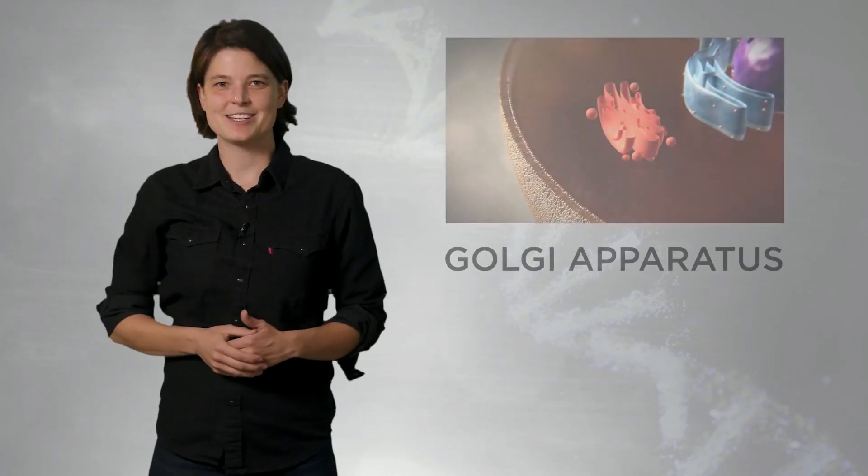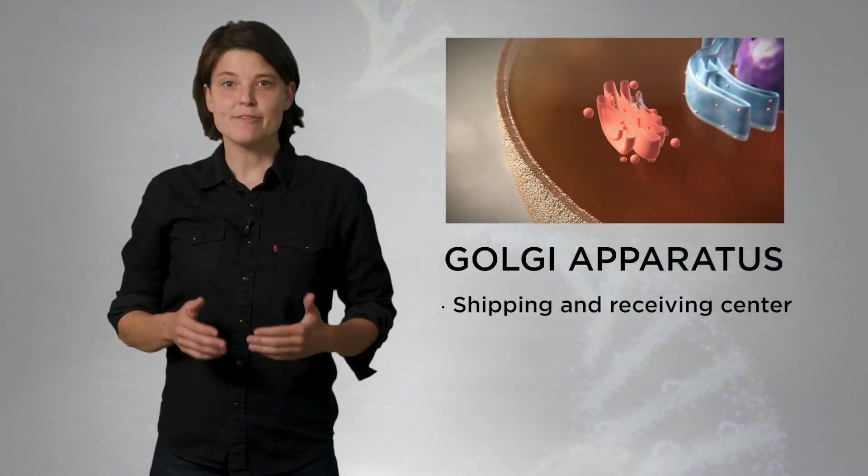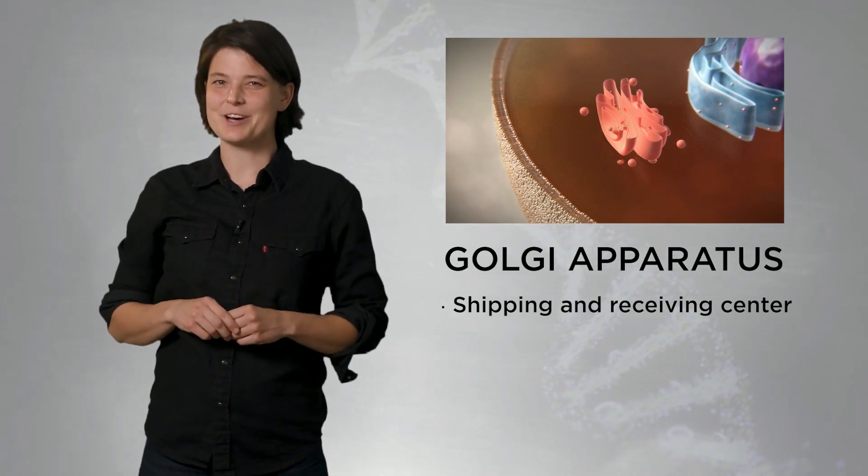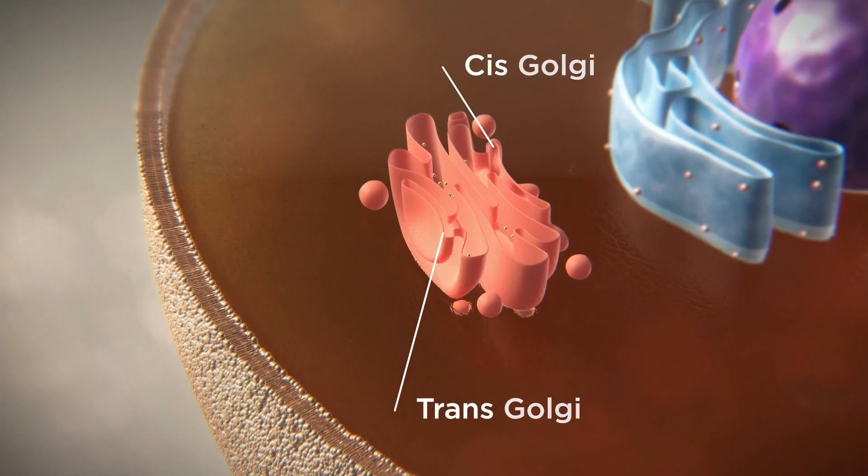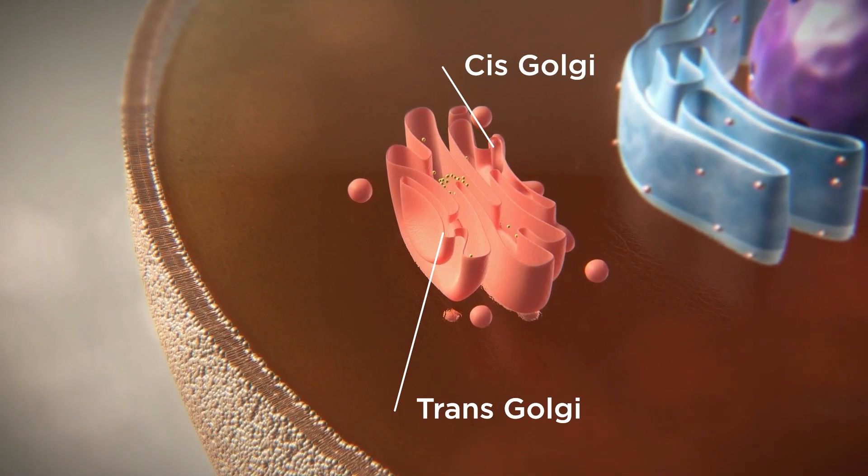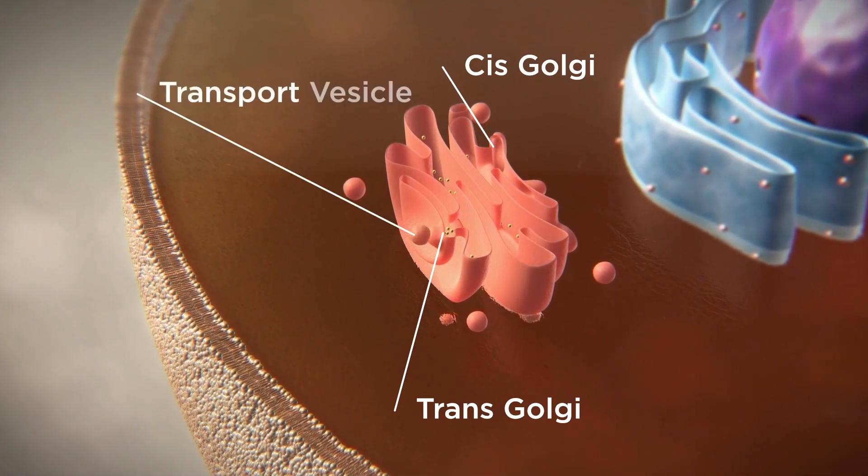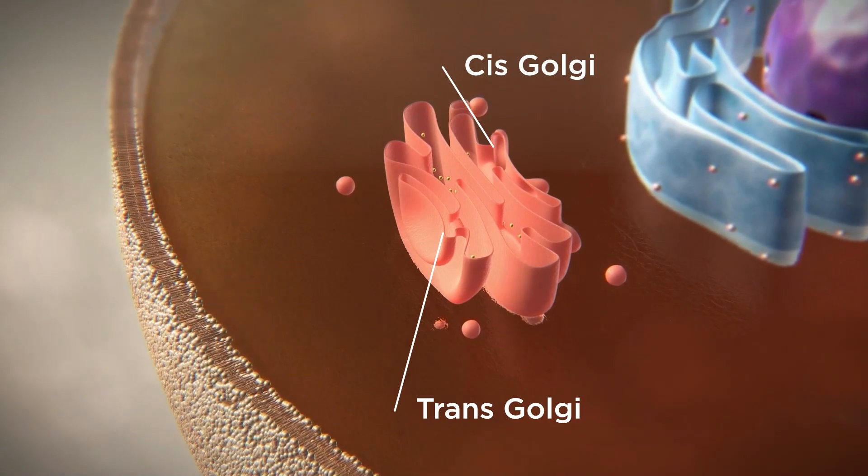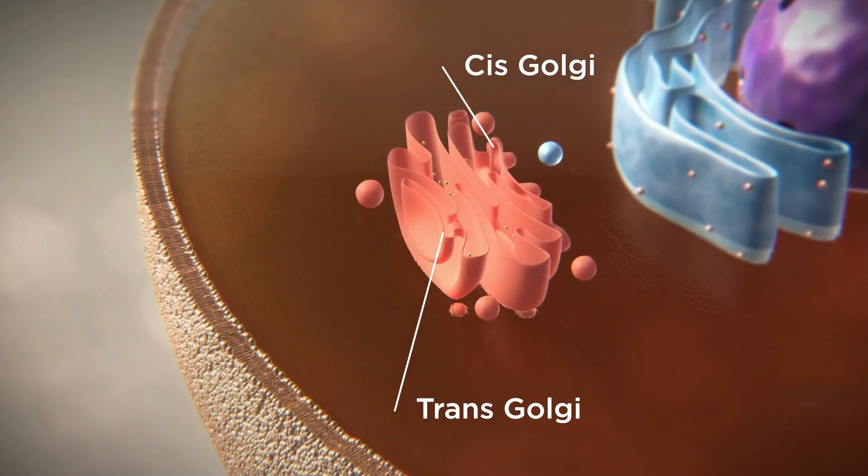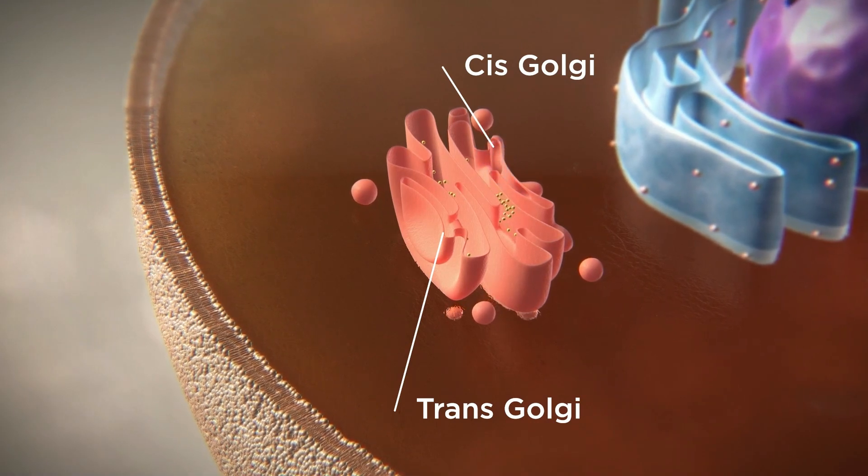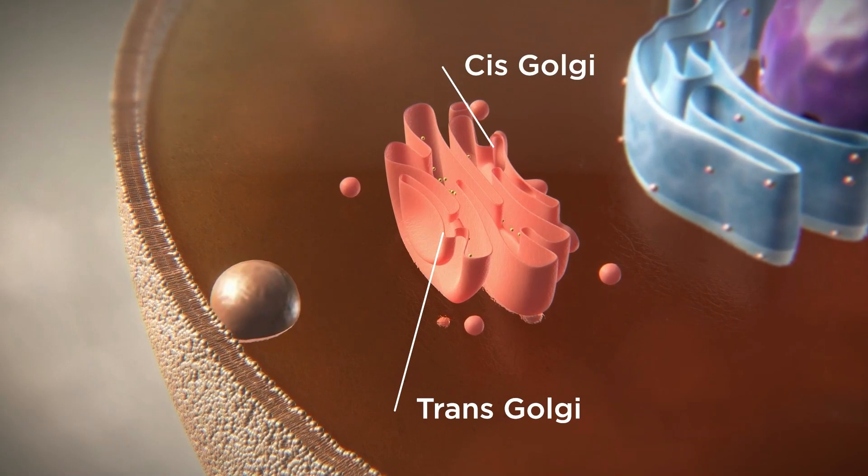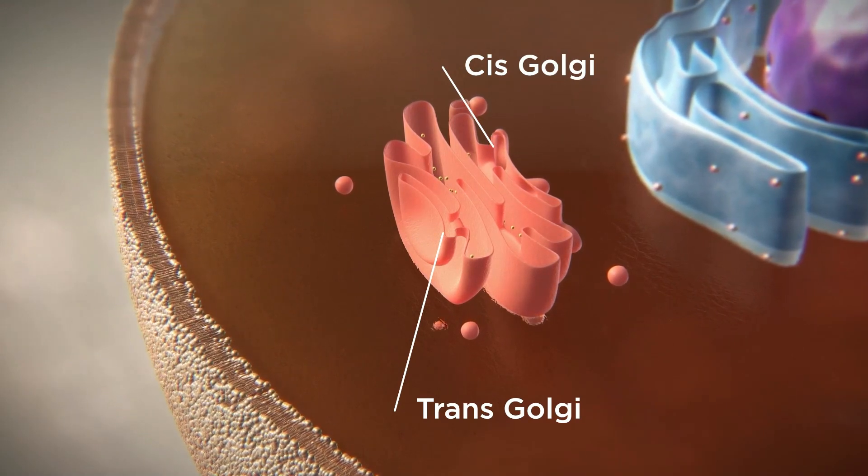The Golgi apparatus, also referred to as the Golgi body, is often compared to a mail room or the shipping and receiving center of the cell. Vesicles that bud off from the endoplasmic reticulum enter the cis-Golgi, or what we can think of as the receiving end. The transport vesicle fuses with the Golgi body and empties its contents into the cisternae of the Golgi. The materials from the endoplasmic reticulum will move from the cis-side of the Golgi to the trans-side, undergoing modifications until they are ready to leave the trans-side, or the shipping end.